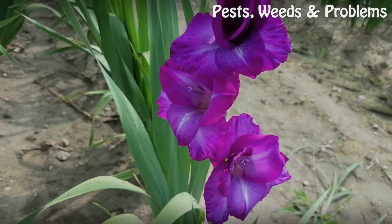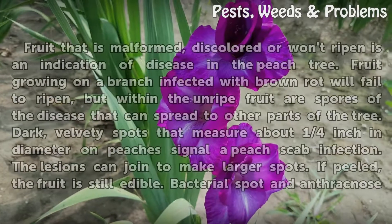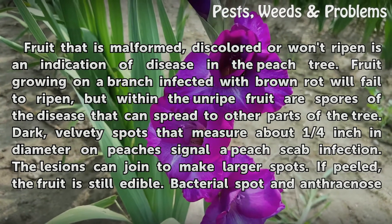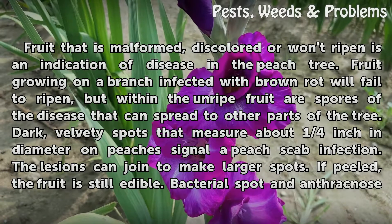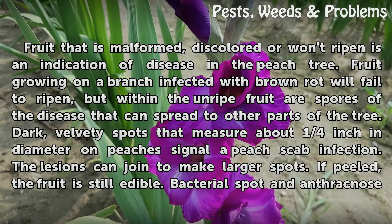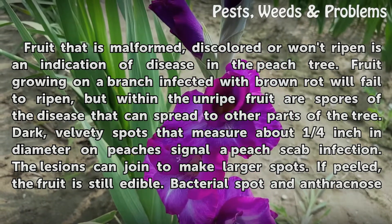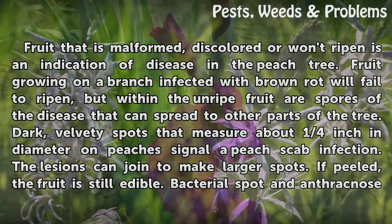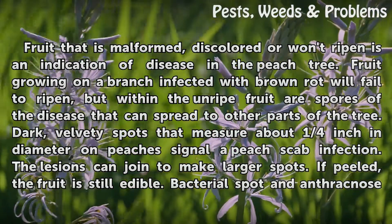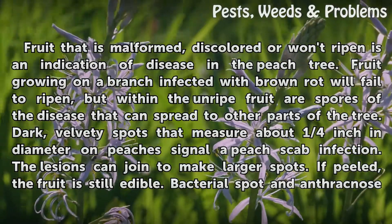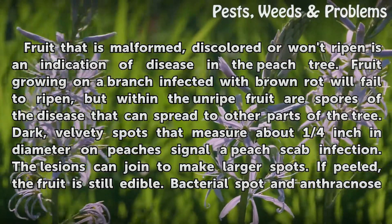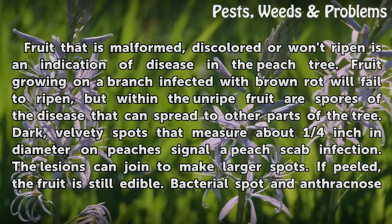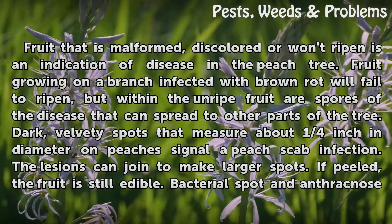Faulty Fruit. Fruit that is malformed, discolored, or won't ripen is an indication of disease in the peach tree. Fruit growing on a branch infected with brown rot will fail to ripen, but within the unripe fruit are spores of the disease that can spread to other parts of the tree. Dark, velvety spots that measure about one quarter inch in diameter on peaches signal a peach scab infection. The lesions can join to make larger spots.